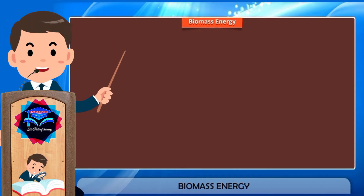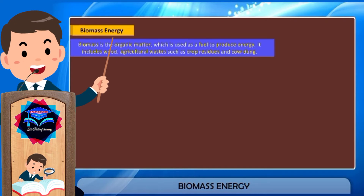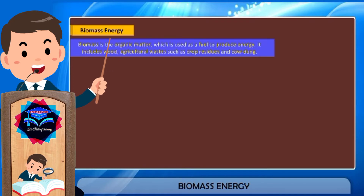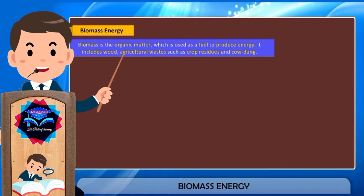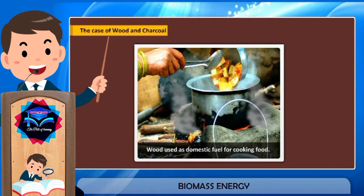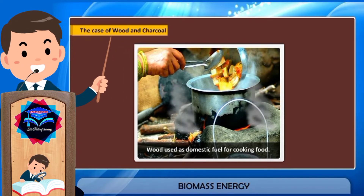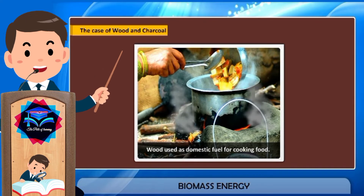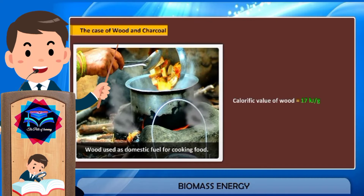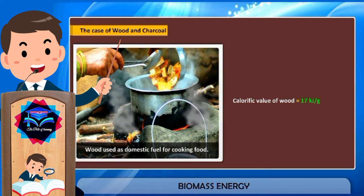Biomass energy: biomass is the organic matter which is used as fuel to produce energy. It includes food, agricultural wastes such as crop residues and cow dung. Since long, wood has been used as a fuel to produce heat energy. This traditional use of wood has many disadvantages such as smoke that causes air pollution, and wood has a low calorific value of 17 kilojoules per gram.